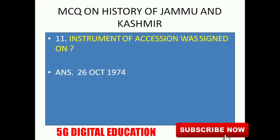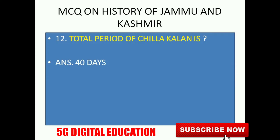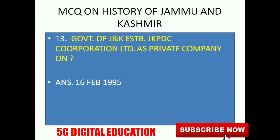The Instrument of Accession was signed on 26 October 1947. Next: What is the total period of Chilla Galan, the cold winter period? Its duration is 40 days. Next: The Government of India established the JK PDC — Jammu and Kashmir Power Development Corporation — as a private company. It was set up on 16 February 1995.